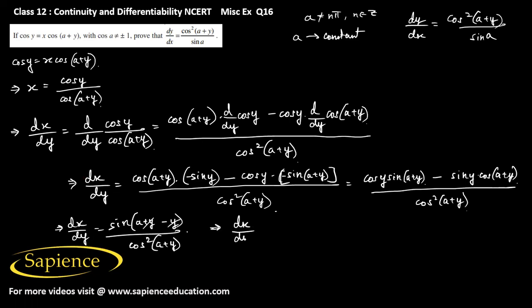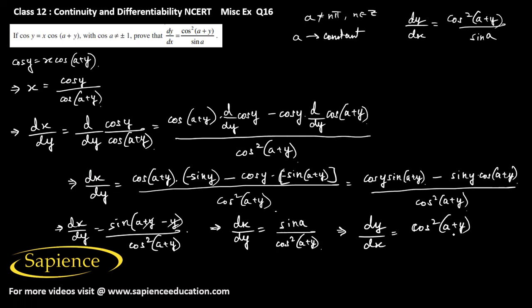So dx/dy equals sin(a) / cos²(a+y). Taking reciprocals on both sides, we get dy/dx = cos²(a+y) / sin(a). Hence proved. Thank you.